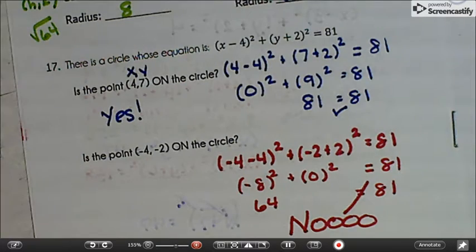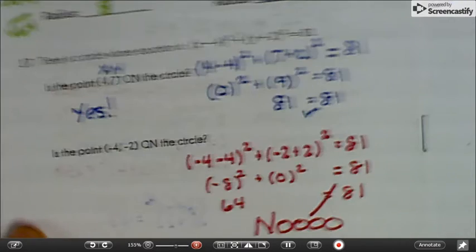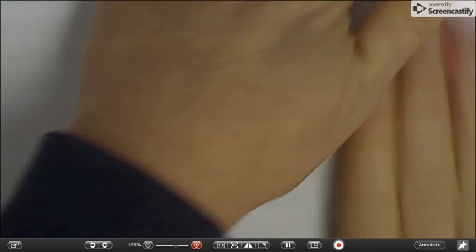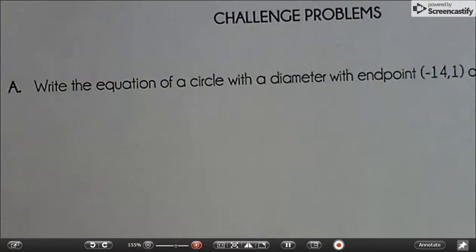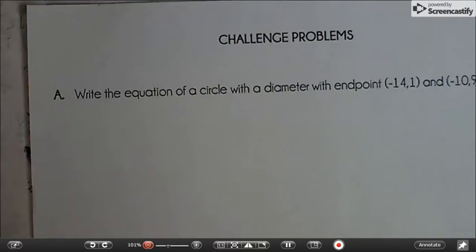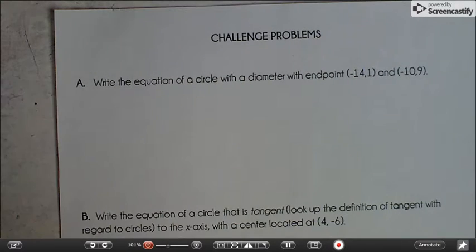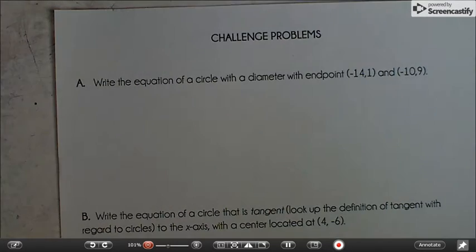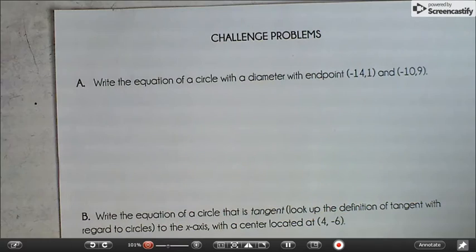All right, that's really all for the formal notes we did together as a class, but I'm going to do a couple challenge problems for anybody that wants to stick around. All right, challenge problem letter A. Okay, write the equation of a circle with a diameter with endpoints negative 14, 1 and negative 10, 9.